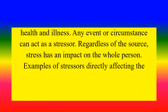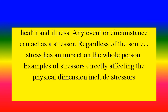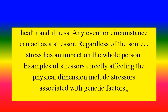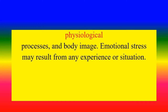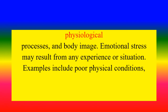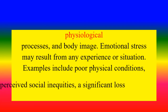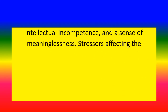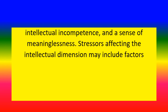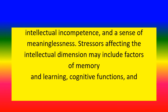Examples of stressors directly affecting the physical dimension include stressors associated with genetic factors, physiological processes, and body image. Emotional stress may result from any experience or situation — examples include poor physical conditions, perceived social inequalities, a significant loss, intellectual incompetence, and a sense of meaninglessness. Stressors affecting the intellectual dimension may include factors of memory, learning, cognitive functions, and expressive functions.